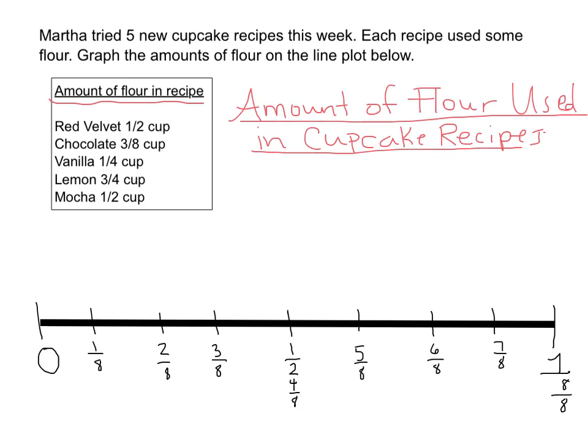We also need to include a label for our scale. What is zero? What is 2/8? What are these numbers referring to? I could write amount of flour, but no one would know what I'm talking about because amount of flour can be measured in grams, ounces, cups, etc. So I need to be as specific as possible. In this case, I'm going to write 'cups of flour' because we're talking about cups of flour.